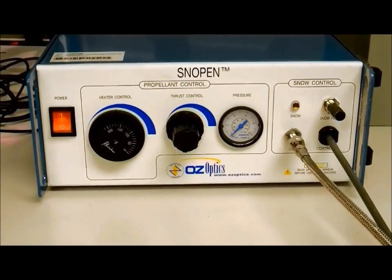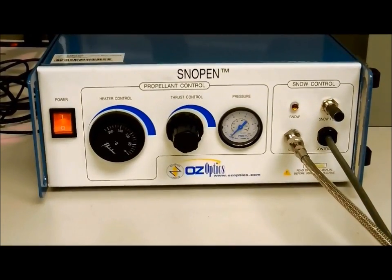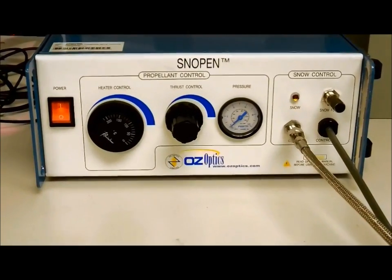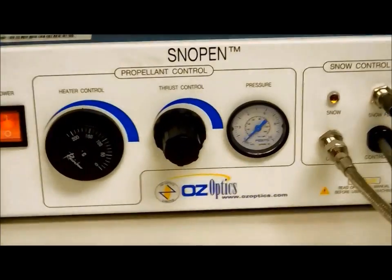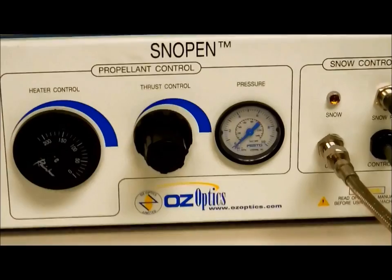The thrust control is the pressure control of the carrier gas, and on the far right is the flow or snow control.